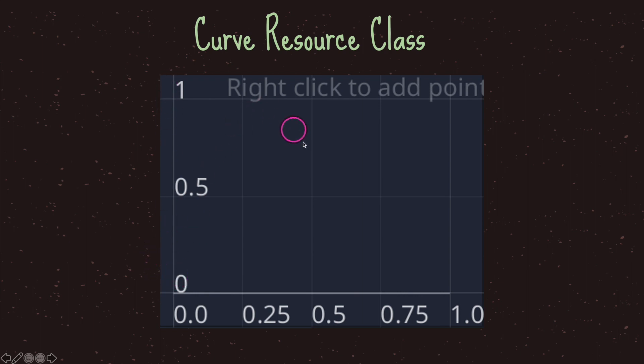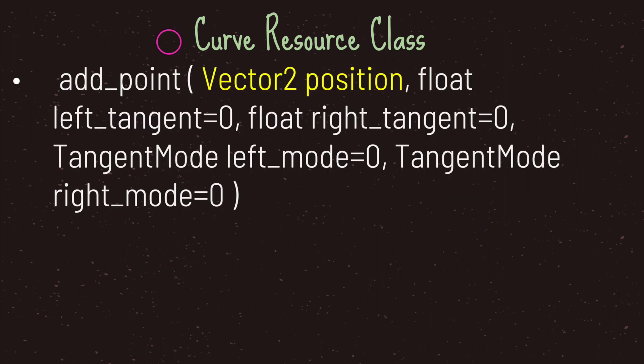Through points, you can create your curve. By default, the curve resource class doesn't come with any points when newly created — you have to add your own. To add a point onto your graph, you use the add_point method provided by the curve resource class. The most important argument is the first argument, which takes a Vector2 data type representing the position you'd like your point to be on the graph.